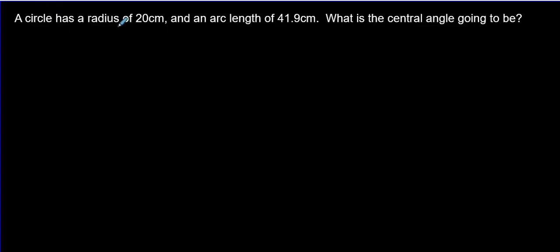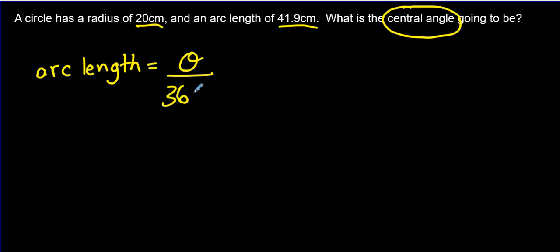What happens if we get a question like this? A circle has a radius of 20 centimeters. It has an arc length of 41.9. What is the central angle going to be? So remember the formula arc length is equal to the angle they give you, the central angle, over 360 multiplied by 2 pi r.